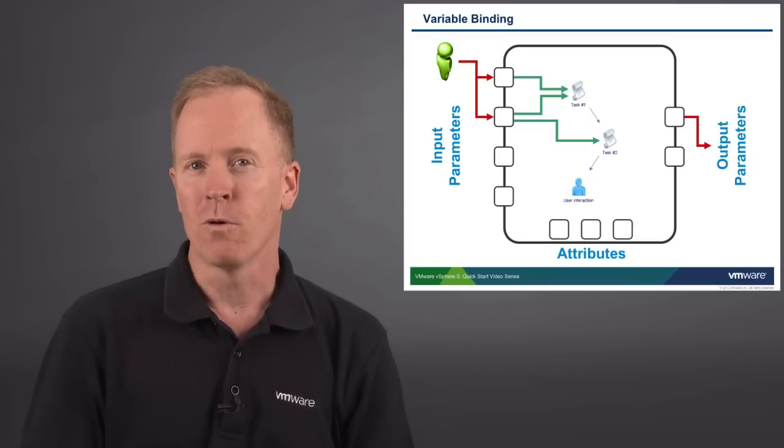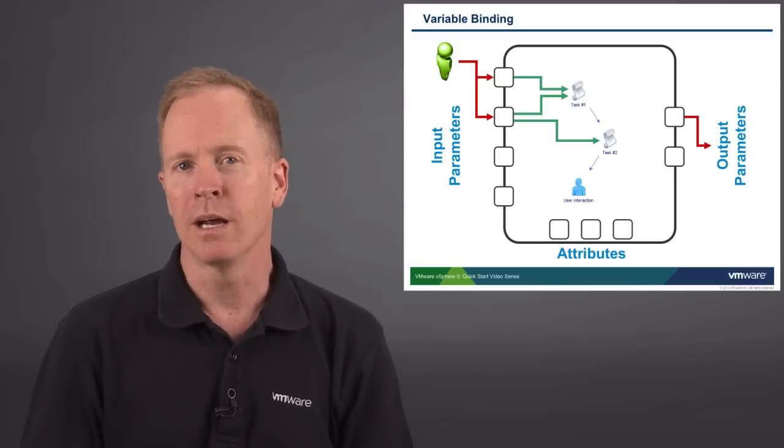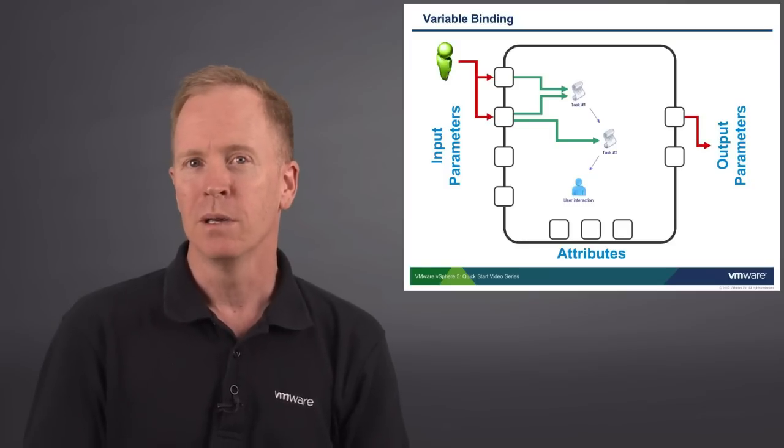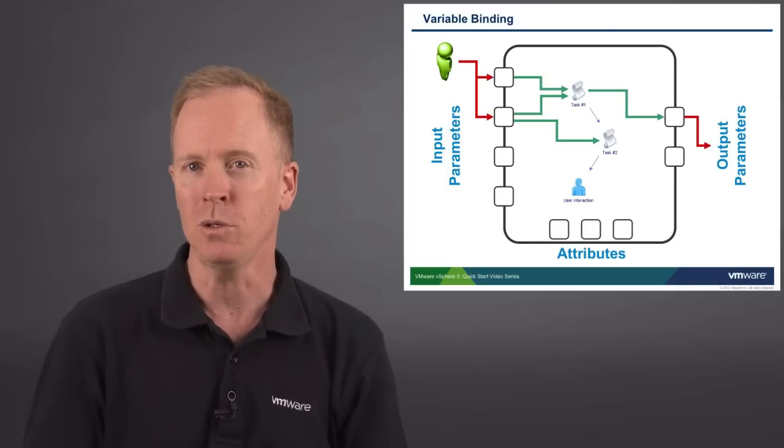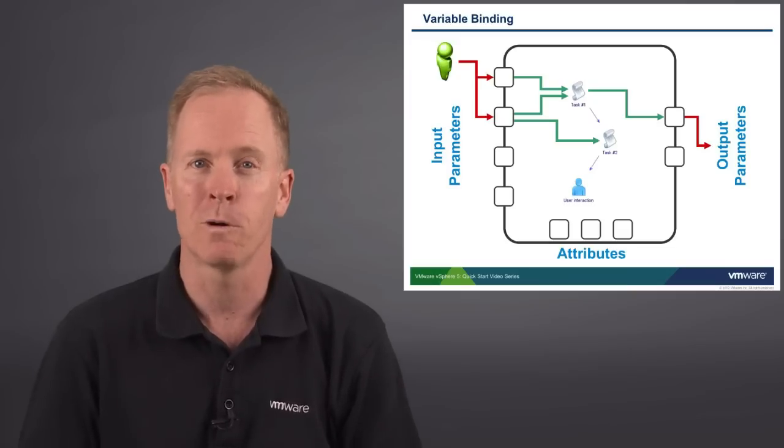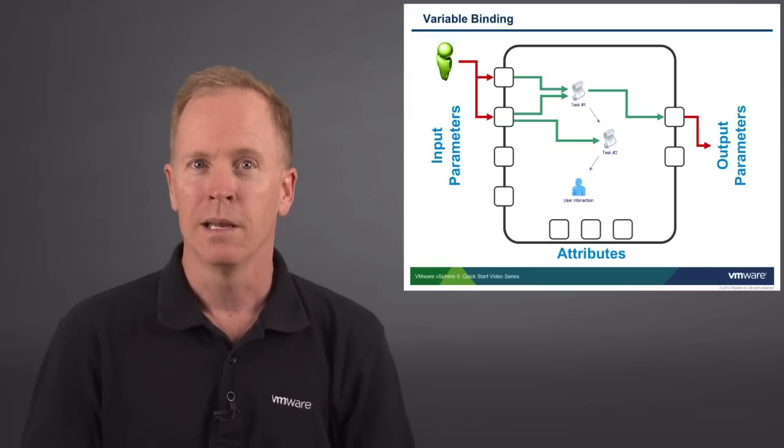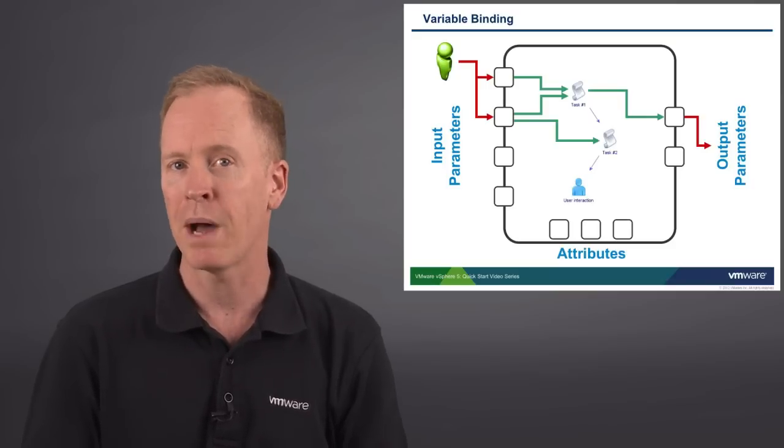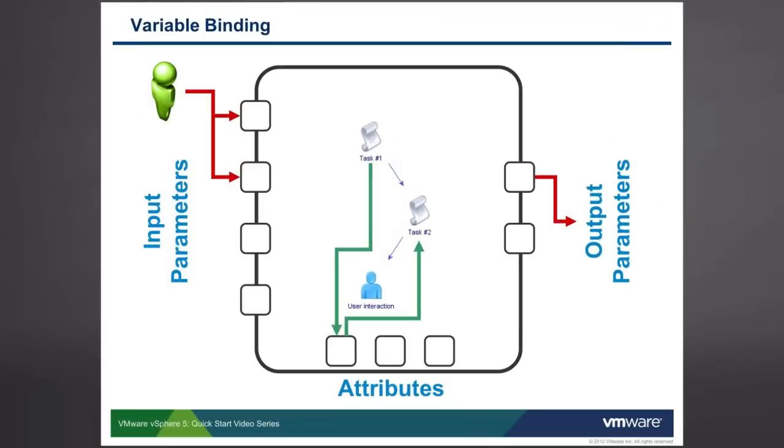In order for values to be exported out of the workflow, we need to set up not just an output parameter, but we need to set up variable binding from a schema element to that output parameter. We're going to see how to set up this variable binding, but right now we're just focusing on the concepts. The key concept to grasp here is that there's a difference between creating a parameter versus binding to the parameter.